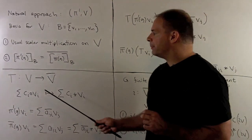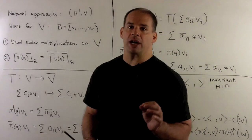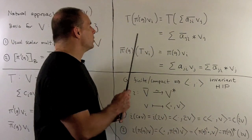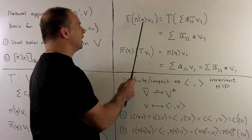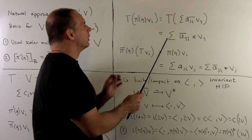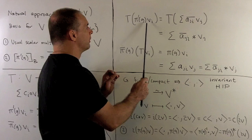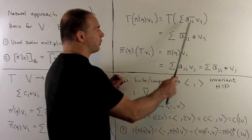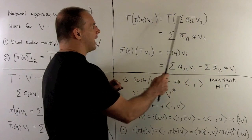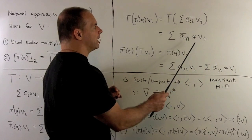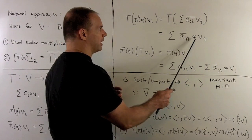Now, let's see that T intertwines our group actions. If we take T of pi prime of G on VI, well, we just follow our nose. We're going to use entries for pi of G with the conjugate. We apply T, and that carries usual scalar multiplication to conjugate multiplication.